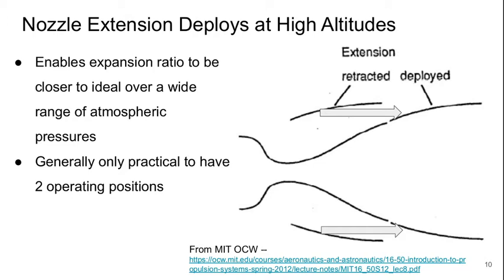An extendable nozzle basically has a larger diameter or larger area expansion which can be either deployed or retracted. This normally begins retracted and deploys at higher altitudes, allowing us to achieve an expansion ratio closer to the ideal value over a wider range of atmospheric pressures. But if you started putting a bunch of these one around the other, the system can become very mechanically complex and very heavy. So in practice, two operating positions is about the practical limit, but this is done and it does help.